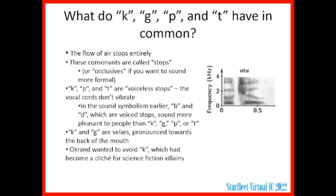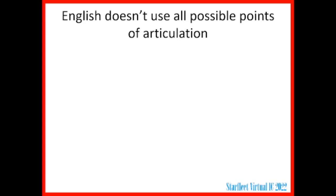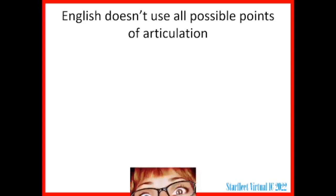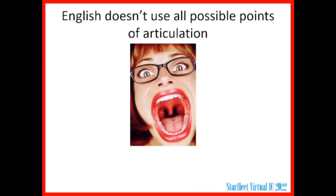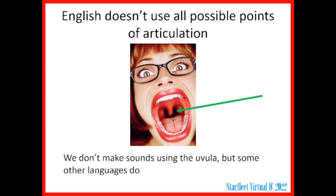Okrand didn't want to use that k sound though, because k had become such a stereotype by that point — it was so commonly used in science fiction villain names that he wanted to move away from it. Now, we mentioned that English uses three different points of articulation for stops, but other languages use other places in the mouth.